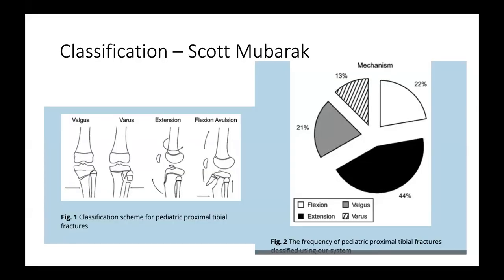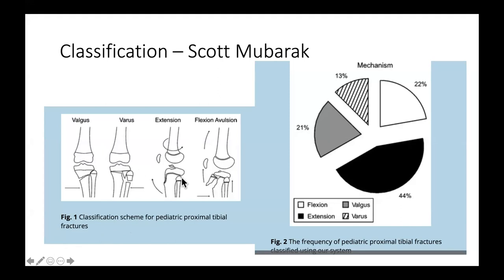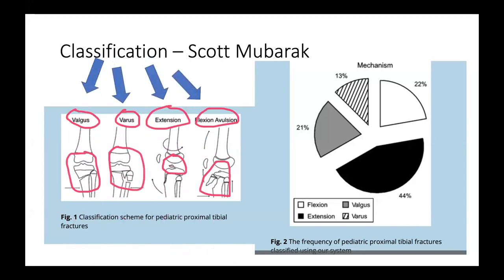Chintan spoke about the tibial tuberosity and tibial spine fracture classifications, but they are hard to remember since you hardly encounter them. Scott Mubarak's classification of the entire gamut of proximal tibial fractures is one of the best to remember. There are four types of injuries: valgus, varus, extension, and flexion avulsion. What will specifically be addressed is the proximal tibial extra-articular metaphyseal fracture which is almost always a valgus injury, leading to the onset of Cosen's phenomenon.